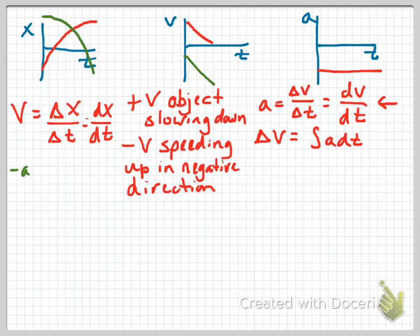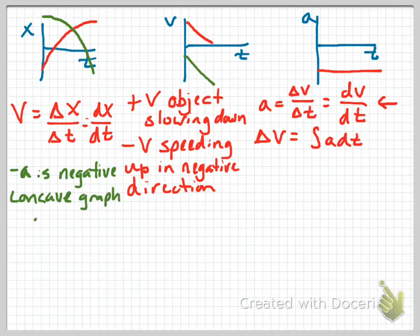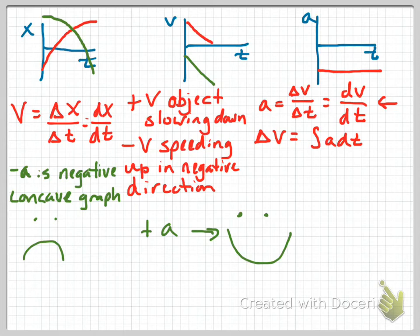Velocity from AP Physics 1 is the change in position over the change in time, or the derivative of position with respect to time. With negative acceleration, the slopes of our velocity versus time graphs are all negative. Acceleration is the slope of a velocity versus time graph. Concave down on a position versus time graph means negative acceleration; concave up means positive acceleration. In AP Physics 1, we used 'happy and sad' graphs — happy graphs are positive, sad graphs are negative.